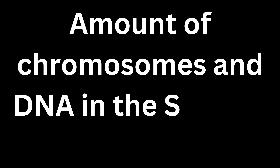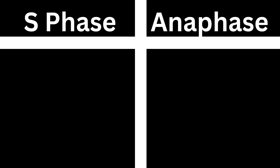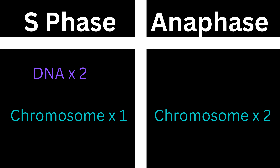Hello everybody. In this video we are going to understand the differences in the chromosomes and the DNA during the S phase and the anaphase, as well as the ploidy in these phases. During the S phase, our DNA replicates but the chromosome number remains the same, whereas during the anaphase, our chromosome number will double.